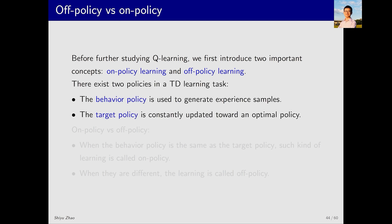In a reinforcement learning algorithm, there are two types of policies. The first is the behavior policy, which interacts with the environment to generate experience samples. The second is the target policy, which is constantly updated and eventually becomes the optimal policy. Previously in methods like SARSA, we implicitly dealt with these, but now we explicitly define them.